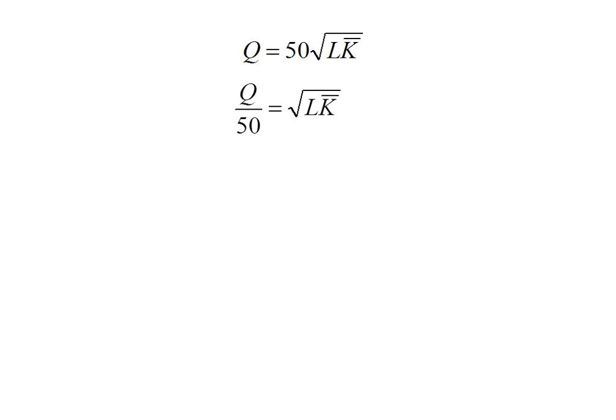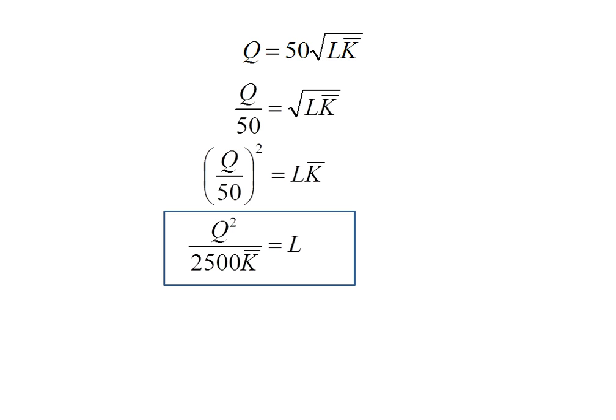Simply what I need to do here now is just solve this for L. So I'm going to divide by 50, then I'm going to square both sides, and then I need to divide by K. Now notice I just distributed in that exponent giving me Q squared over 2500 times K bar.